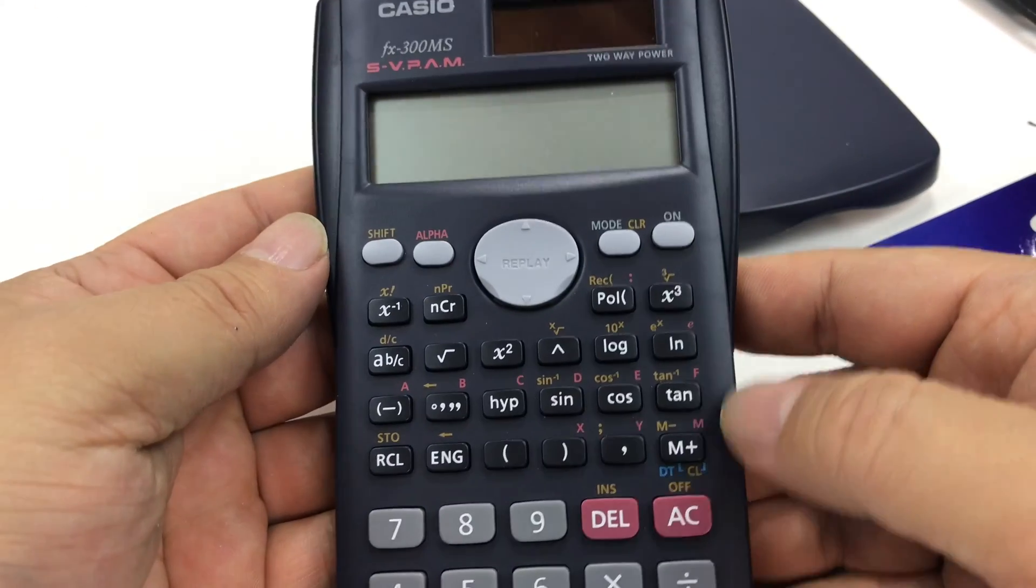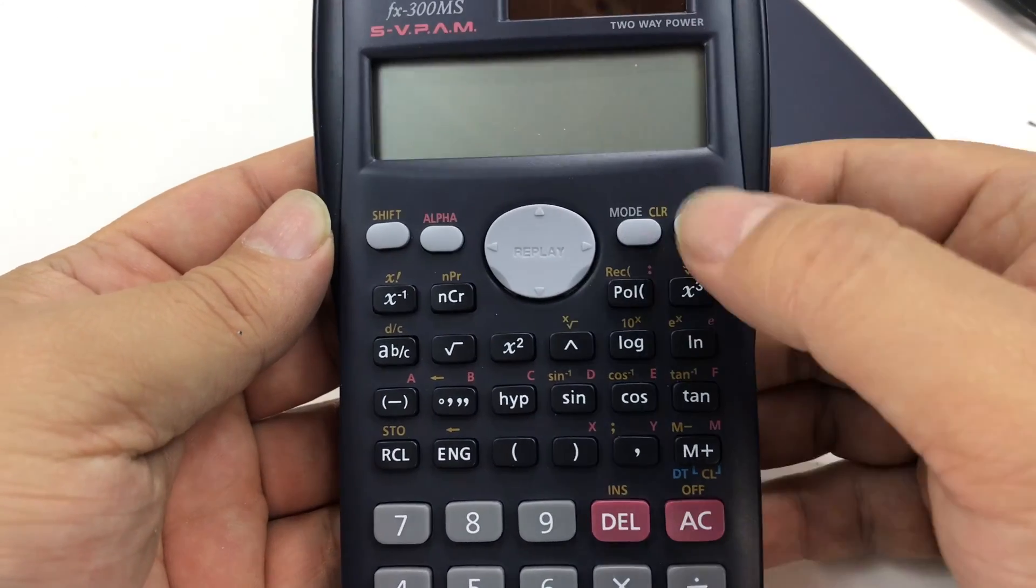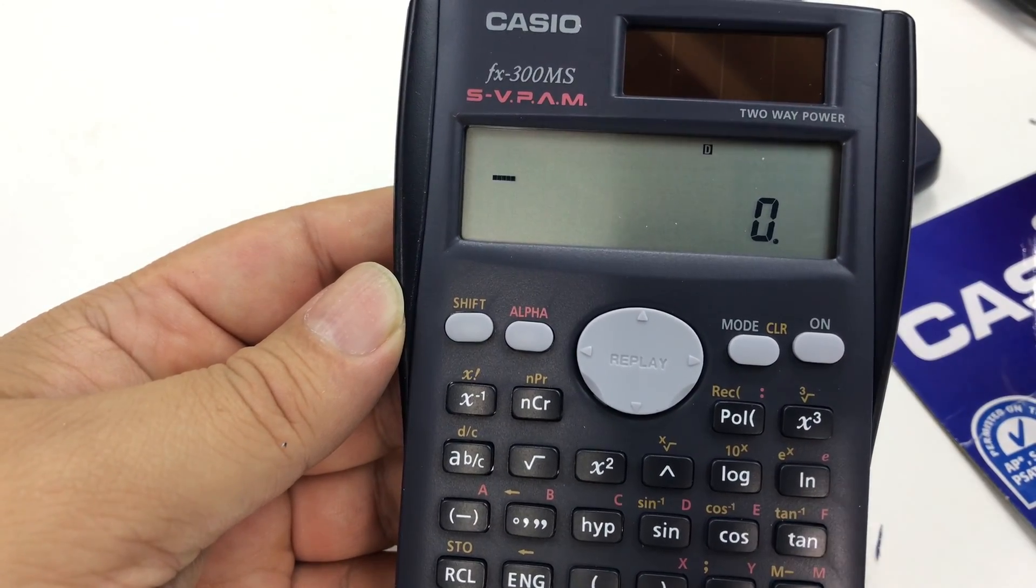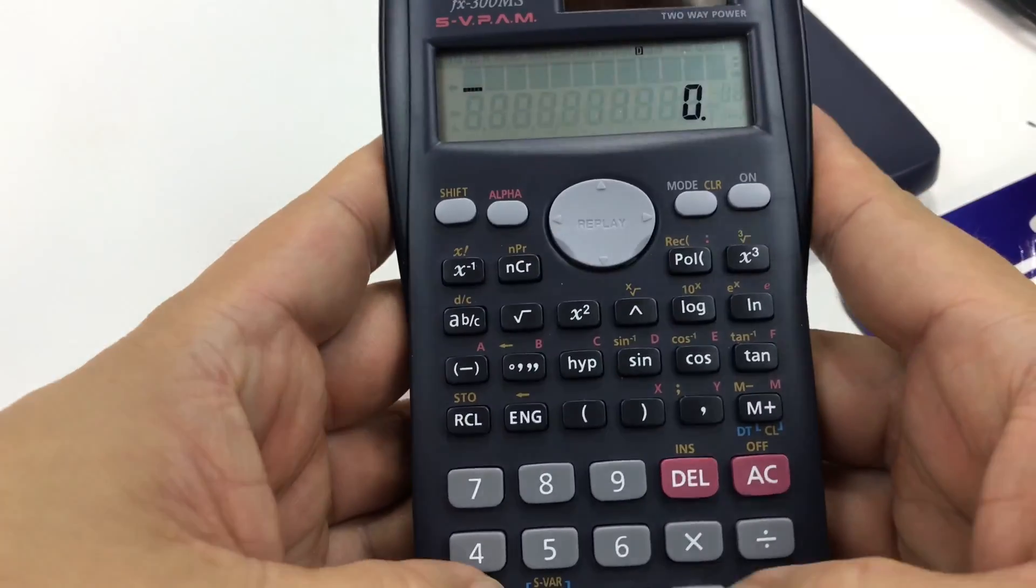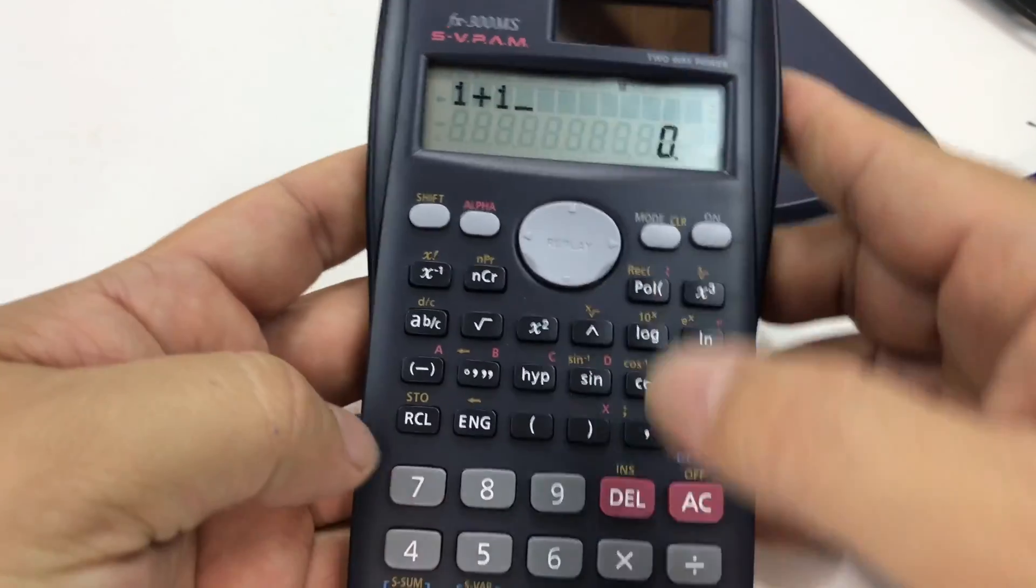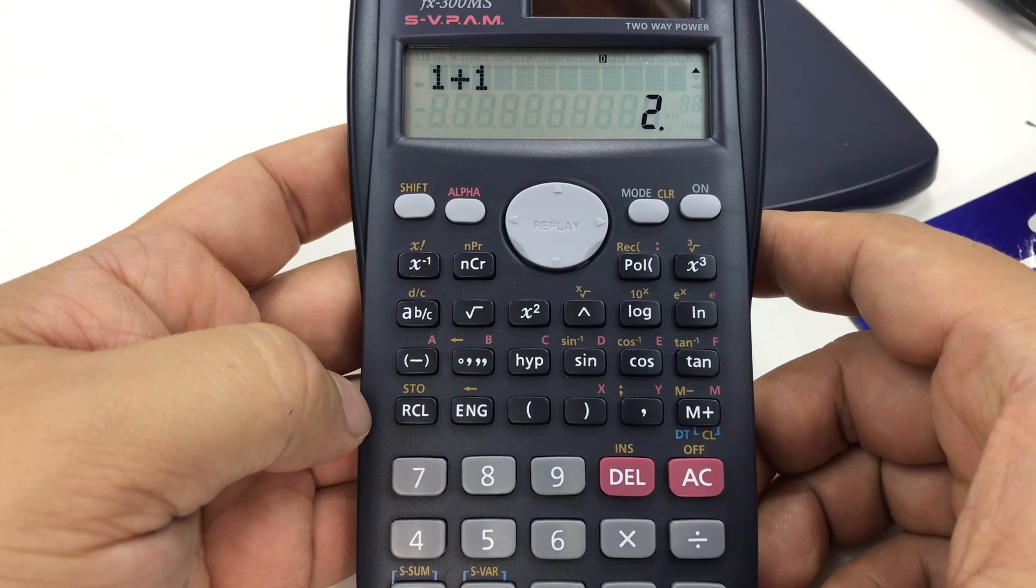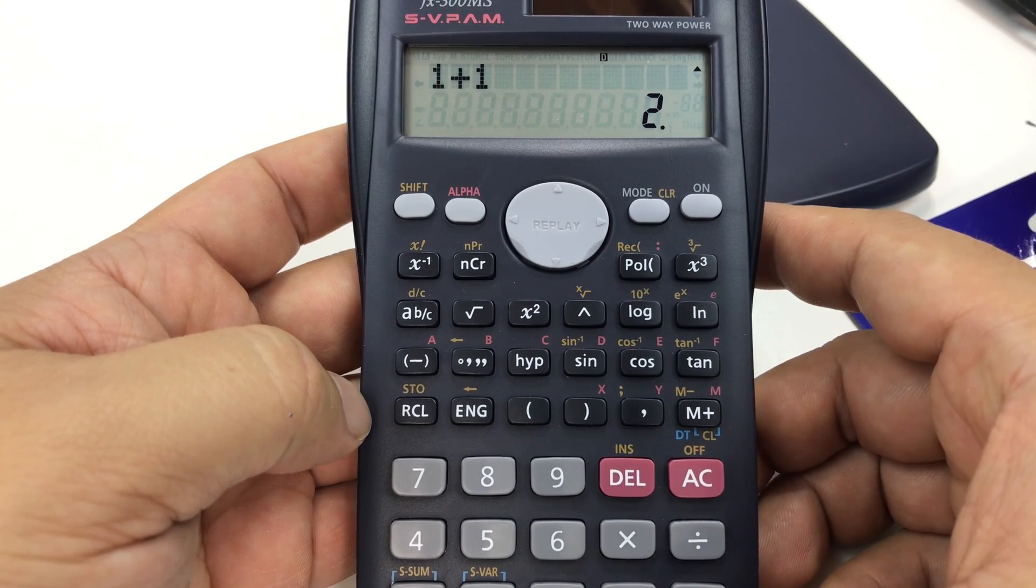Now let's see if we can get this sucker on. On. Boom. Right there. Look at that. And we can see 1 plus 1, as you can see it's lining up right up there, and then hit equals 2. Nice.